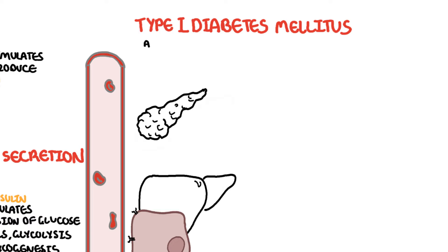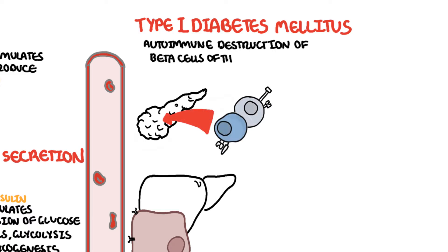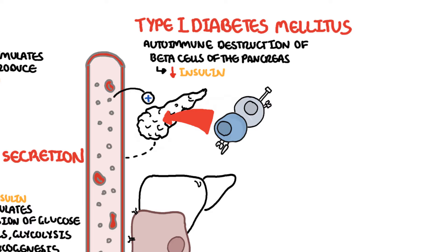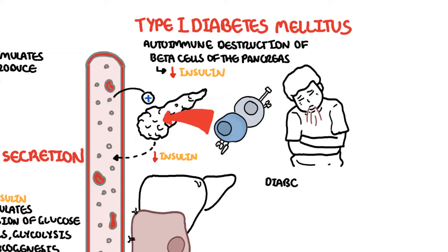Type 1 diabetes is characterized by autoimmune destruction of the pancreatic beta cells, leading to absolute insulin deficiency. No insulin production causes an increase in blood glucose levels. Type 1 diabetes is typically diagnosed in childhood and children often present with diabetic ketoacidosis, which is a medical emergency. However, one fourth of cases are diagnosed in adults.